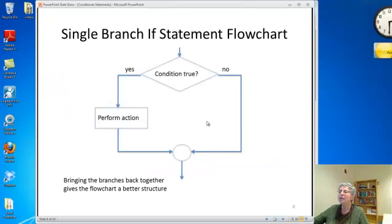Here's a flowchart for the single branch if statement. We test if the condition is true. If it is, we perform the action that's between the then and the end if. Otherwise, if it's not, we do nothing and just continue with the rest of the program.